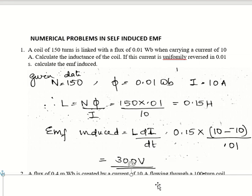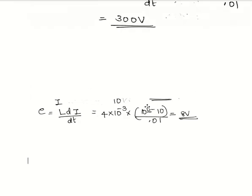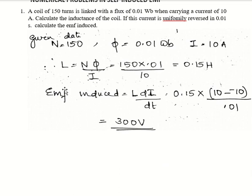The answer is 300 volts. The method is: first write all given data, then write the required equation. For inductance, use L = Nφ/I. For EMF, use E = L × dI/dt. Check whether all data are given, then substitute the values.